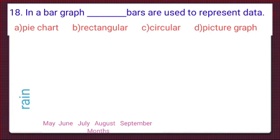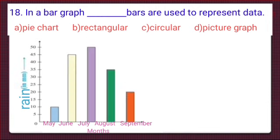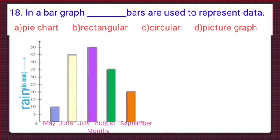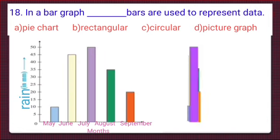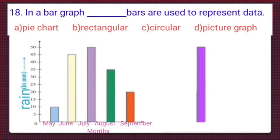Here is a bar graph. It has many coloured bars to represent the data. This bar shows the amount of rainfall in different months. It is clear that rectangular bars are used here. So rectangular bars is the correct option, and option B shows rectangular bars. We will put a tick mark at option B, that is rectangular.